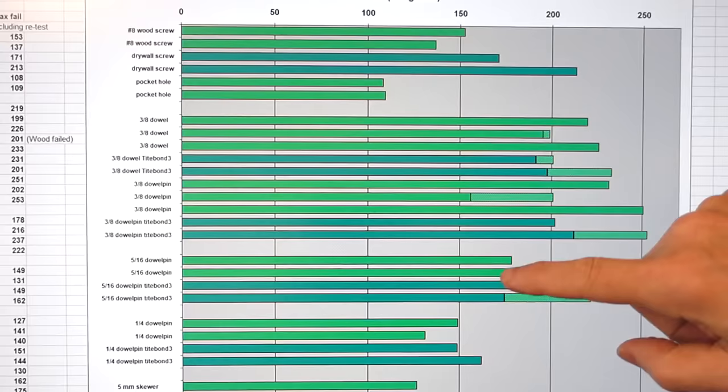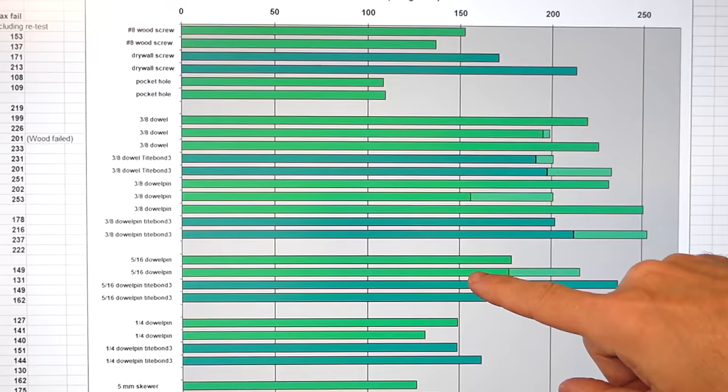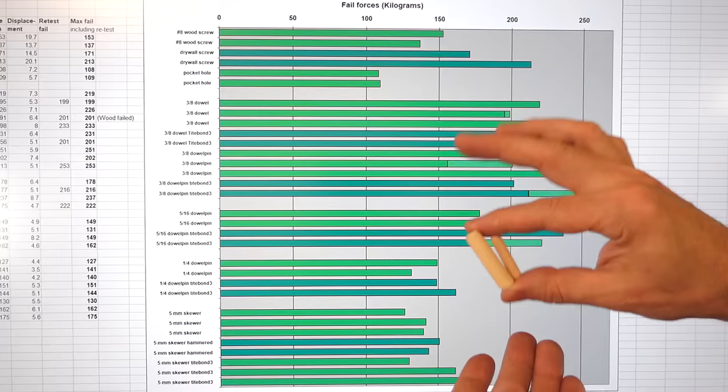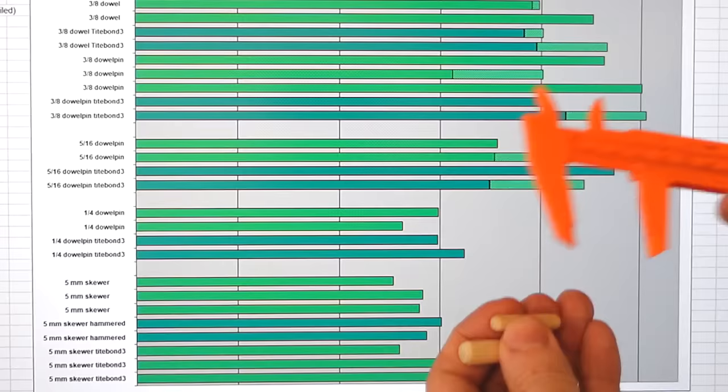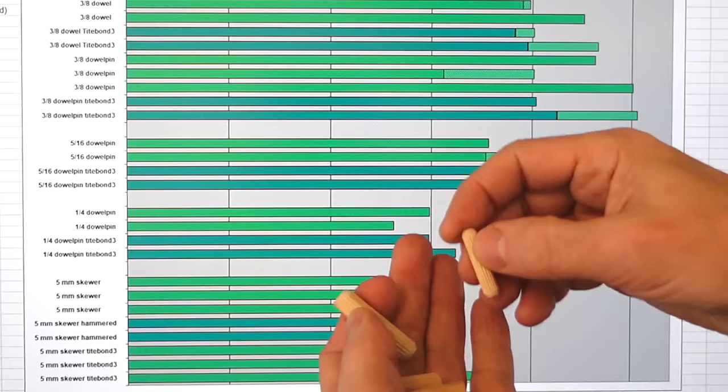Next group after that is 5/16 inch dowel pins which are a little bit smaller than the 3/8s. But, they did almost as well. So, that's pretty good. Then, 1/4 inch dowel pins which are also a bit shorter. These are just an inch and 1/8 long or about 28 millimeters. And, that's actually a pretty good showing considering these dowel pins are so much smaller than the big ones.